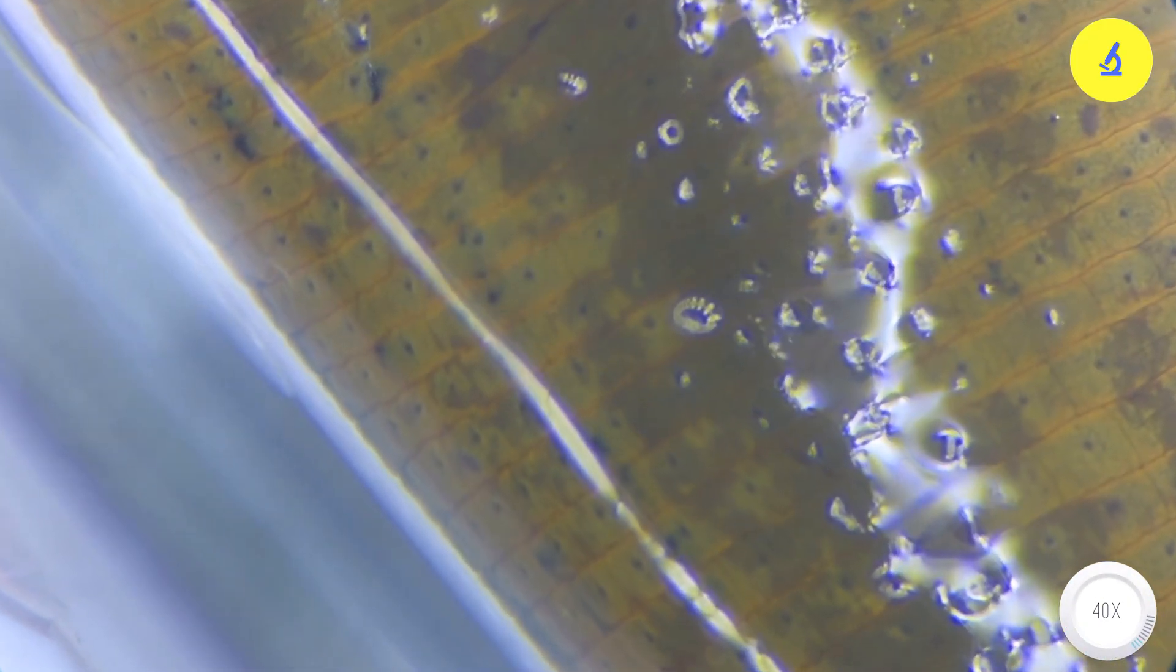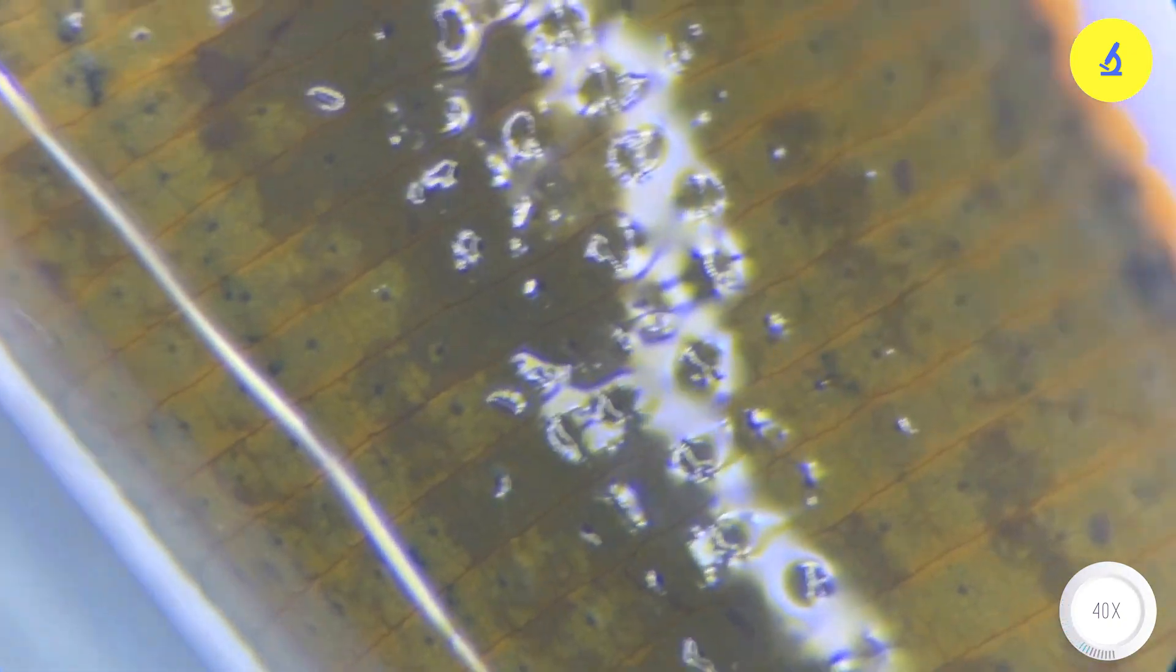We are observing this leech under 40x magnification. It is elongating its body and moving like a measuring worm. Its body is flattened along the dorsal ventral axis and has black spots on each segment, totaling about 33 to 34 segments. Its body is very long, smooth, and covered with a layer of slimy, lubricating substance on the outer surface. This slimy fluid is secreted by the leech's epidermal cell layer.